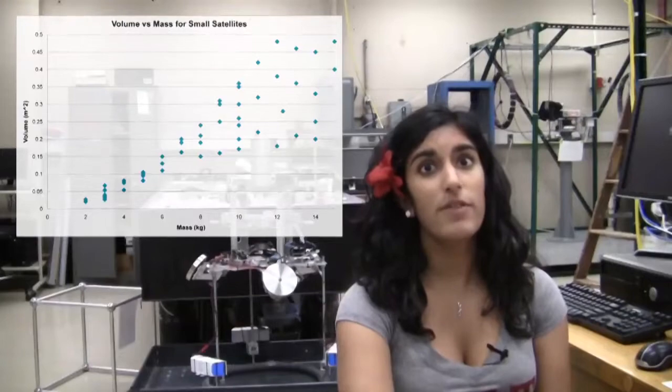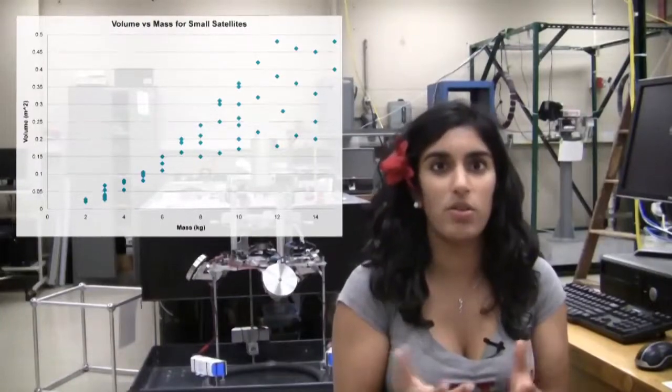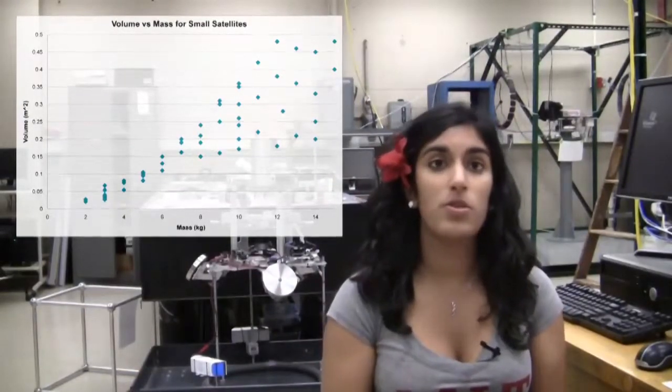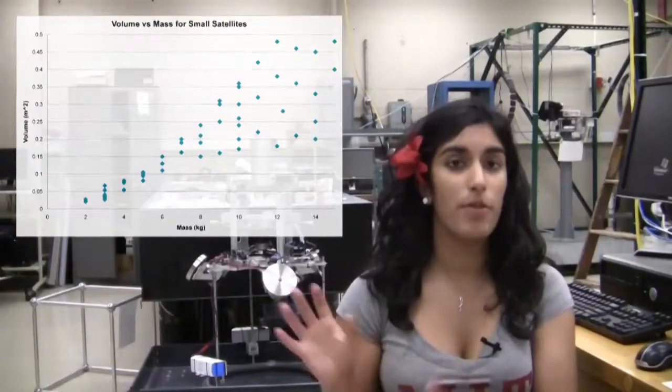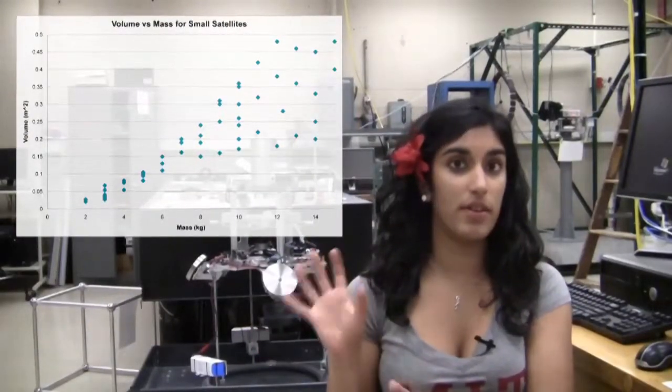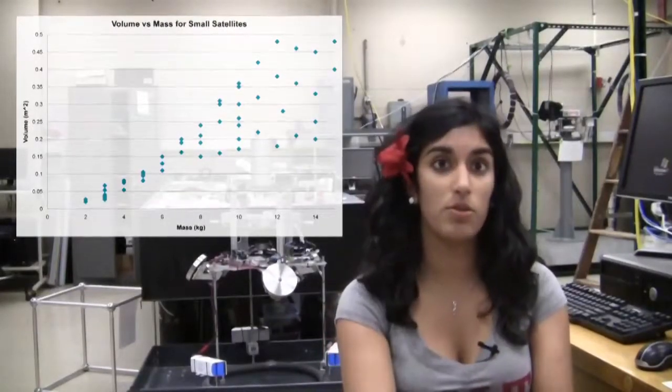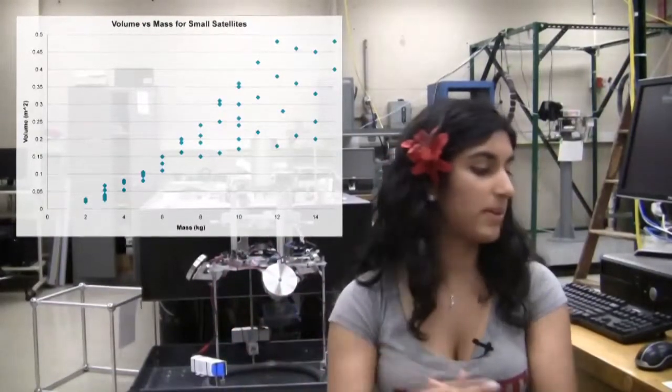Obviously, not every 10 kg satellite is of the exact same size or shape. Some could be tightly packed to fit inside a launch vehicle, and some could be larger to take advantage of a larger surface area for solar panels. This scatterplot shows the design of small satellites. As you can see, for the smaller masses, there is a smaller range of volume because there isn't much play as to how much you can do. As the mass gets larger, the volume gets larger as the trade space becomes bigger.